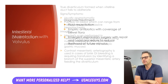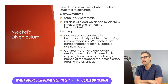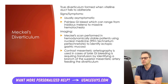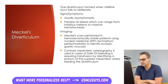Next is Meckel's diverticulum, a true intestinal diverticulum — meaning it contains all layers of the small bowel wall. This results from failure of the vitelline duct to obliterate during embryonic development. We use the rule of twos to describe it: 2% of the population has it; the lesion is at least 2 inches long; it's located 2 feet from the ileocecal valve; it affects men 2 times more often than women; and 2% of those affected will develop complications, usually by age 2.